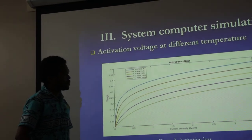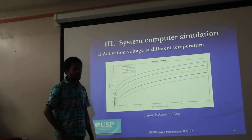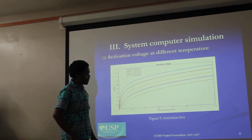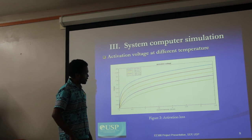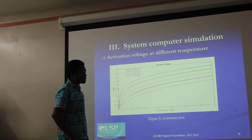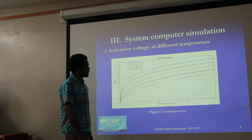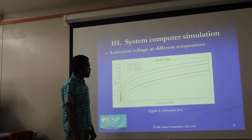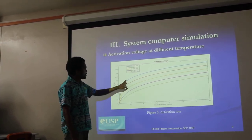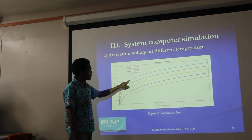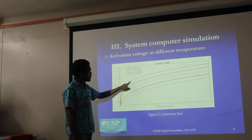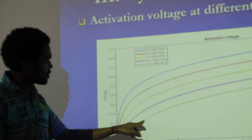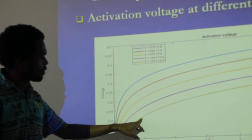Based on the simulation model of activation loss, this graph is obtained. The graph shows that activation loss decreases while the temperature increases. From this graph you can also see that the blue line, which is simulated at low temperatures, shows that activation loss increases as temperature decreases.